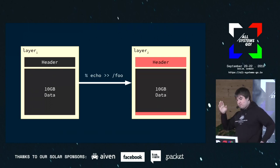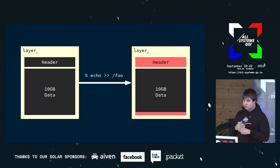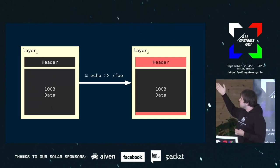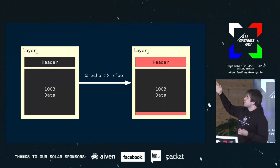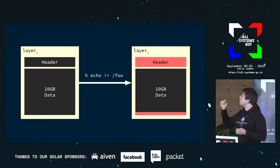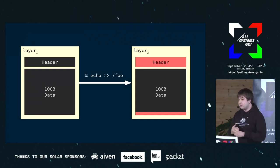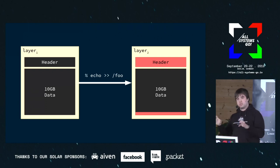The other problem: imagine you modify a file slightly — a 10-gig file where you flip one bit or add a little data. Even with the metadata extensions some tar formats support, there's no way to solve this within tar, because you have to have the entire thing. There is no way to express 'I already have this file, but here's the diff from the previous version — add this little bit to it.'